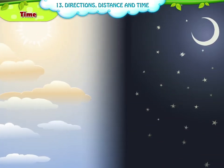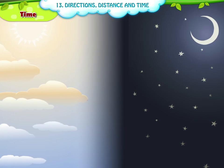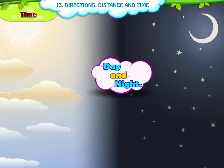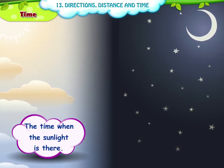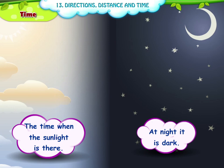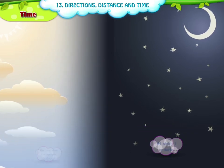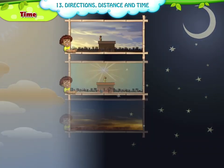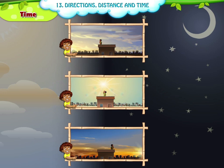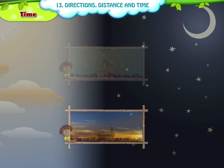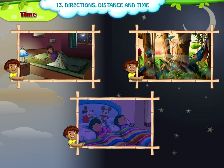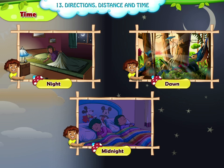Time. If we talk about time, we refer to day and night. The daytime is the time when sunlight is there, and at night it is dark. The day is divided into three parts — morning, afternoon and evening. The night also consists of three parts — night, midnight and dawn.